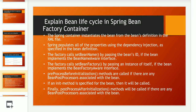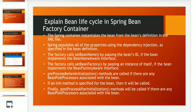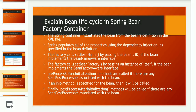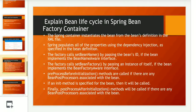The next question was: explain the bean life cycle in a Spring factory container. A couple of things happen when Spring initializes. First, the Spring container instantiates the bean from the bean definition in the XML file. Then Spring populates all the properties using dependency injection as specified in the bean definition. The factory calls setBeanName passing the bean ID if the bean implements BeanNameAware interface, and calls setBeanFactory passing an instance of itself if the bean implements BeanFactoryAware interface. Pre-process before-initialization methods are called if any BeanPostProcessors are associated. If an init method is specified, it will be called. Finally, post-process after-initialization method will be called if there are any BeanPostProcessors associated with the bean.